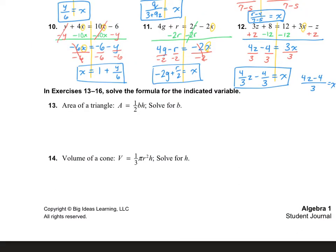In exercises 13 through 16, we want to solve the formula for the indicated variable. In number 13, we want to solve for B. I'll circle my B. My suggestion is to get rid of that fraction first by multiplying by the reciprocal — that would be 2. So I multiply by 2 on both sides, giving 2A equals BH because the half and the 2 cancel. Then I divide out the H, and my answer is B equals 2A over H.